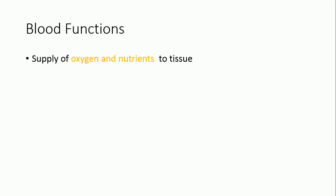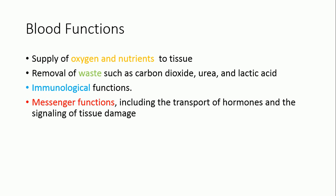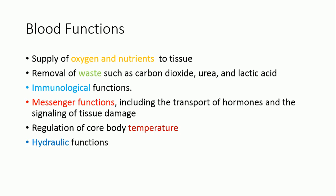Blood has many functions like supply of oxygen and nutrition to tissue, and acts in removal of waste such as carbon dioxide, urea, and lactic acid. It has immunological function and messenger function including the transport of hormones and the signaling of tissue damage. It also acts in regulation of core body temperature and has a hydraulic function.